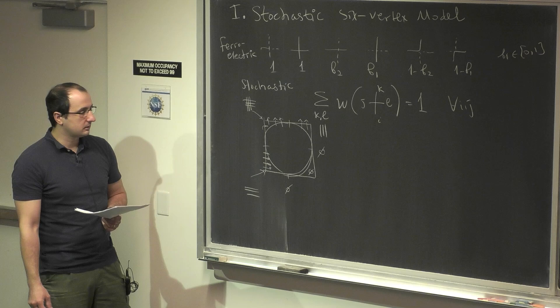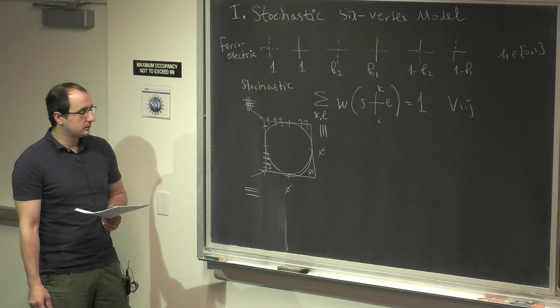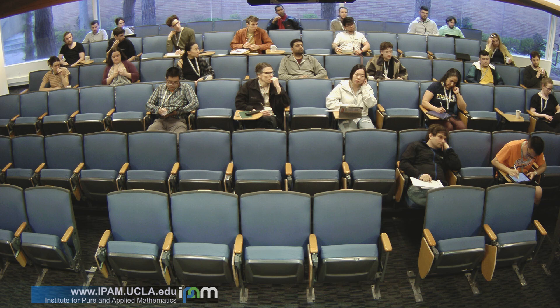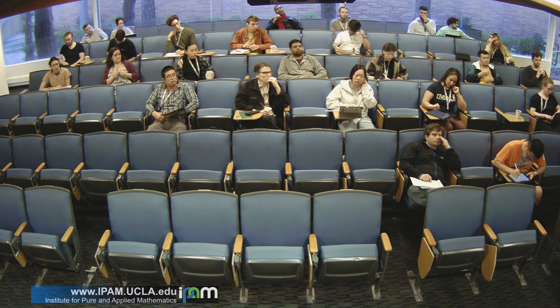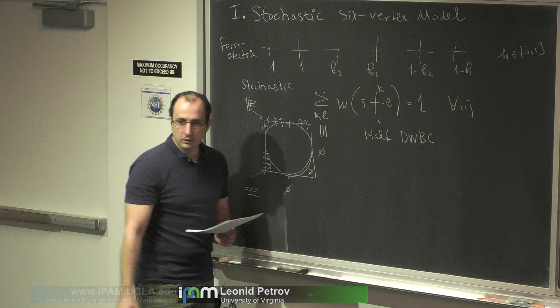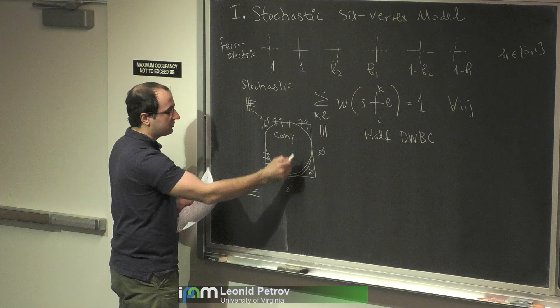We don't know local translation-invariant ergodic Gibbs measures; we don't have good control of them. The Arctic curve is a gluing together of four algebraic curves. Instead of the domain wall, we can also do the half domain wall, where the situation is much different and much better.